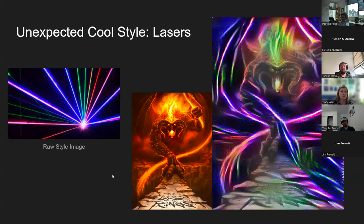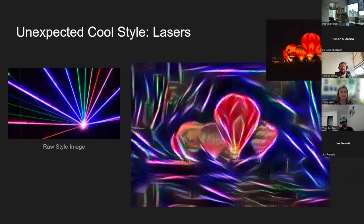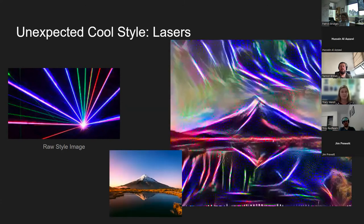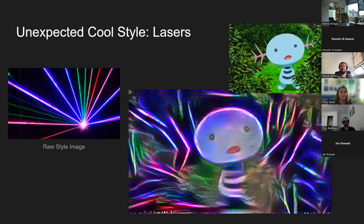Another unexpectedly cool style was this image of lasers. Here's laser Balrog, which is kind of fun. Laser balloon glow gives it a whole new vibe — kind of like a rave balloon glow. There's a cool picture of an elk at sunrise, and a picture of a mountain. I generated about 20,000 images, so there were a lot of bad laser images and a few that were pretty cool. Here's a Pokemon where the laser style detached his little ear antennae from his head and turned them into lasers — so now he's kind of a little worm instead of a tadpole.